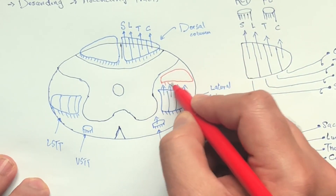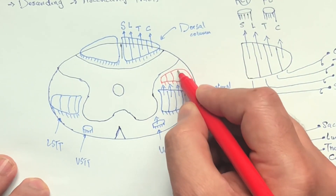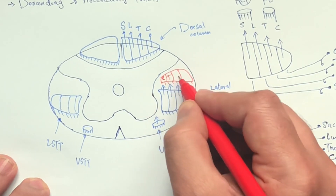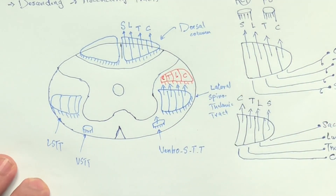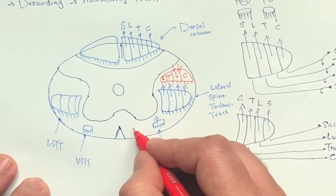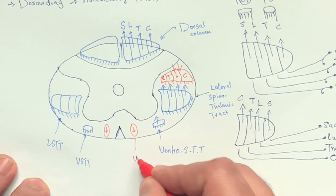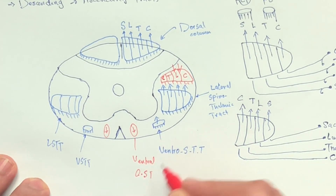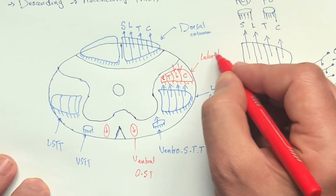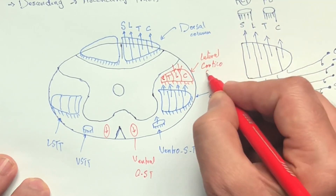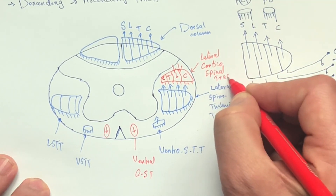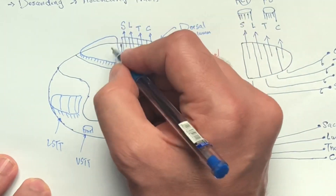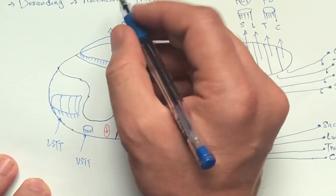Now we draw the red one, which is the descending tract or the motor system, and it will have the same pattern as the lateral spinothalamic tract. There is an S in the diagram. It has the ventral and the lateral. It's the corticospinal tract — coming from the cortex to the spinal cord. That's why the name given is corticospinal tract.